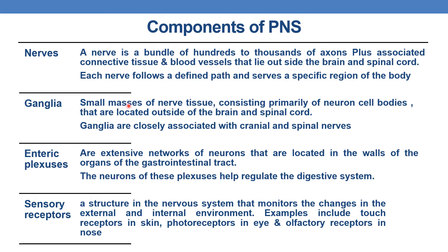A ganglion is a small mass of nerve tissue consisting primarily of neuron cell bodies located outside the brain and spinal cord. The ganglia are closely associated with cranial and spinal nerves. The next component is the enteric plexus — an extensive network of neurons located in the walls of the organs of the gastrointestinal tract. These neurons help regulate the digestive system.